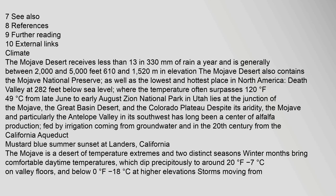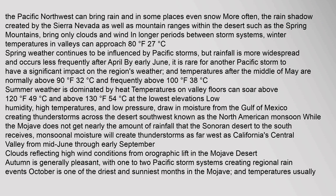The Mojave Desert receives less than 13 inches of rainfall annually. The Pacific Northwest can bring rain and in some places even snow more often. The rain shadow created by the Sierra Nevada, as well as mountain ranges within the desert such as the Spring Mountains, bring only clouds and wind. In longer periods between storm systems, winter temperatures in valleys can approach 80°F.